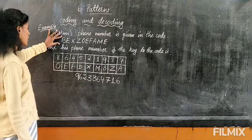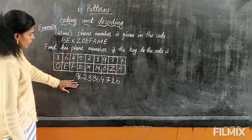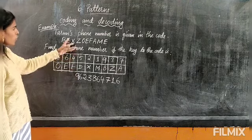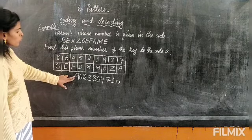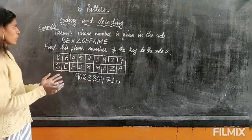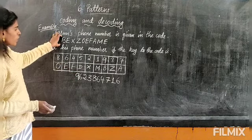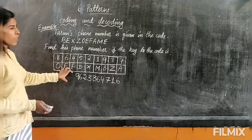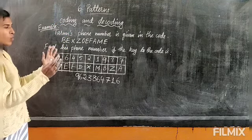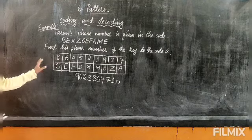A code is given, and a key is provided for that code. Using the key, you find the real number — the original answer. Decoding means the original number is given and you create a code for it — that is called decoding, just the opposite. Coding means the code is given and from that you find the real, original one. Decoding means for the original one, you make a coded message.